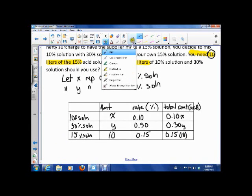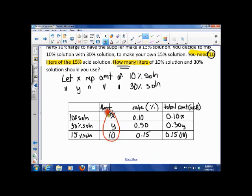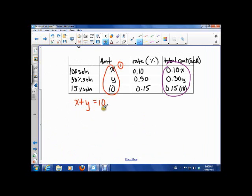So that now gives us our equations. There's equation one. And it says x plus y is equal to 10. And here's equation two. And that says 0.1x plus 0.3y is equal to 0.15 times 10. So 1.5. So we've got our two equations, 1 and 2. And now we want to go about solving.